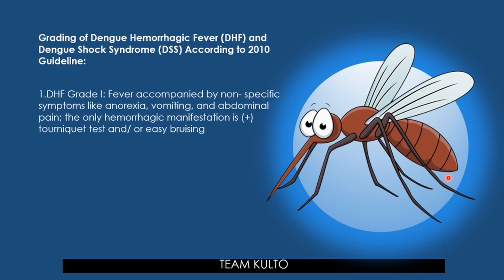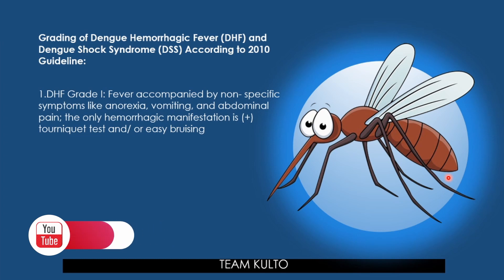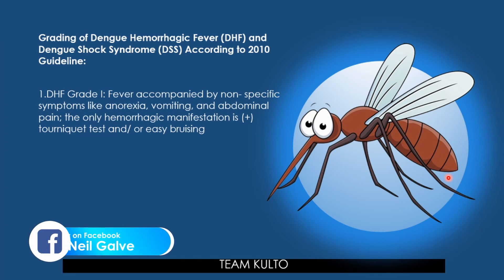According to 2020 guidelines, the grading system for dengue hemorrhagic fever and dengue shock syndrome includes: suspected, Grade 1, Grade 2, Grade 3, and Grade 4. Grade 1: fever accompanied by non-specific symptoms like anorexia, vomiting, and abdominal pain — the only hemorrhagic manifestation is a positive tourniquet test and/or easy bruising.